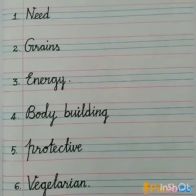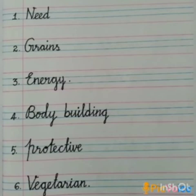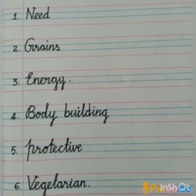Ok students, once again I will read it. Listen carefully. First one: Need — N, E, E, D. Need. Second one: Grains — G, R, A, I, N, S. Grains. Third one: Energy — E, N, E, R, G, Y. Energy. Fourth one: Bodybuilding — B, O, D, Y. Body. B, U, I, L, D, I, N, G. Building. Bodybuilding.